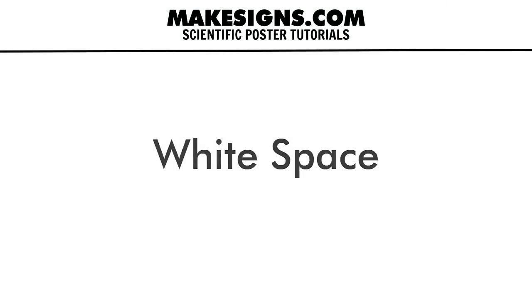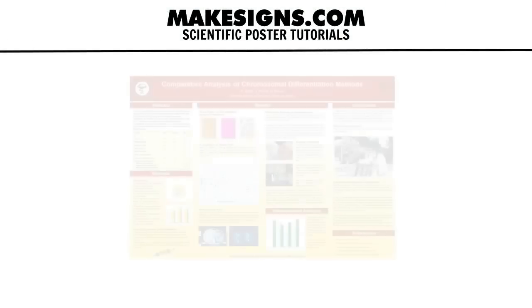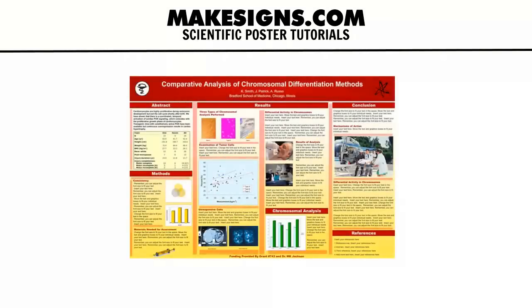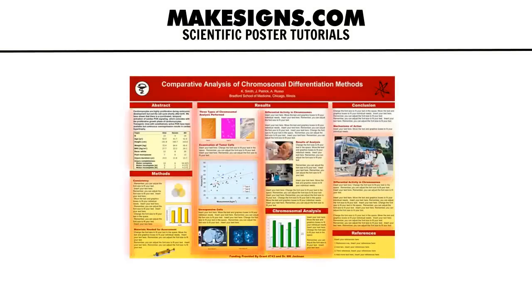What is white space? It's basically just the empty space around the different components or sections of your poster. By components, we mean a block of text, an image, graph, chart, or anything that you've sectioned off in some way.